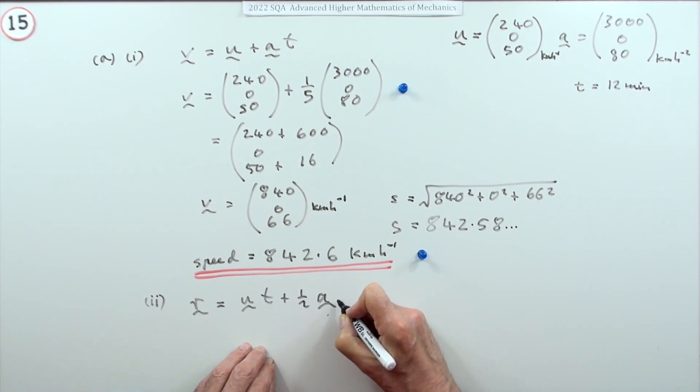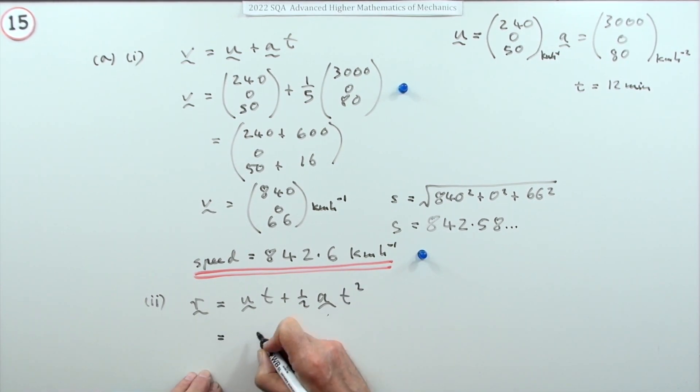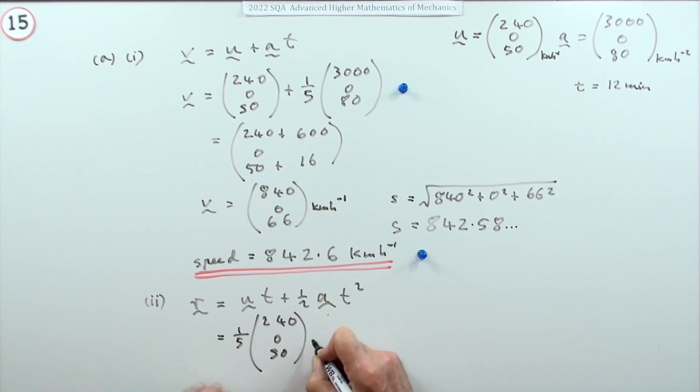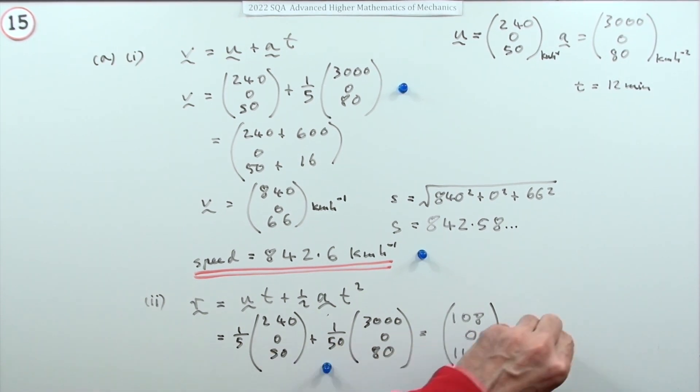r equals ut plus half a vectors t squared. So t is a fifth, so a fifth of (240, 0, 50). t squared is a 25th, that's a 50th of (3000, 0, 80). That's for substituting into the displacement equation. The first part is 48 and 60 is 108, that's zero, and 10 plus 1.6 is 11.6 kilometers for that.